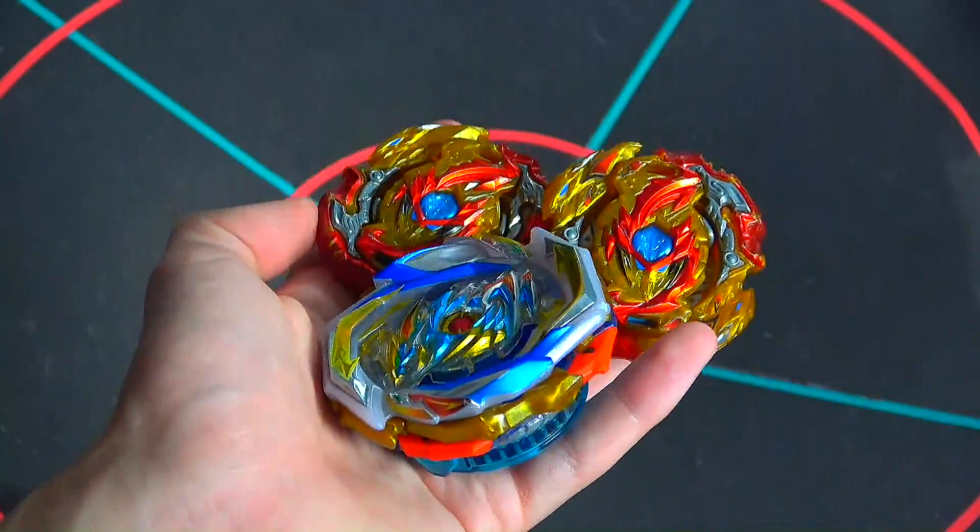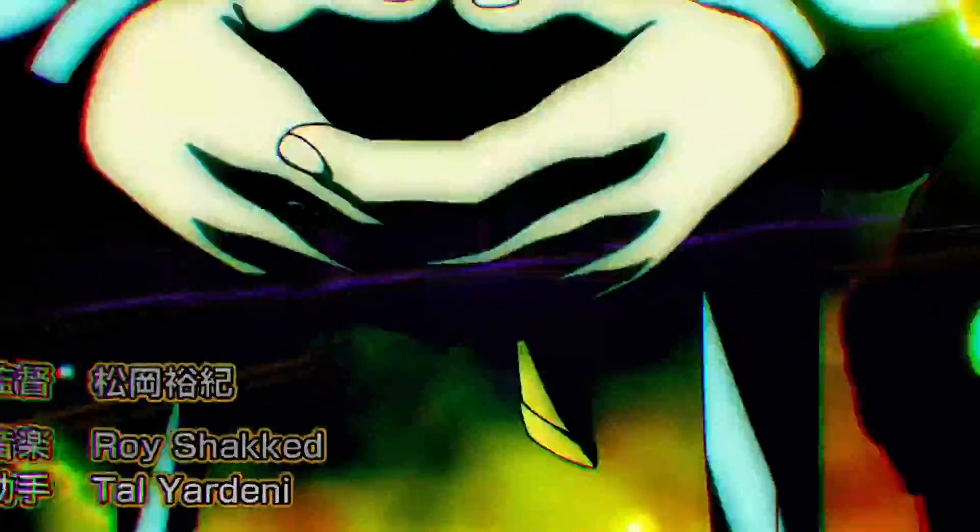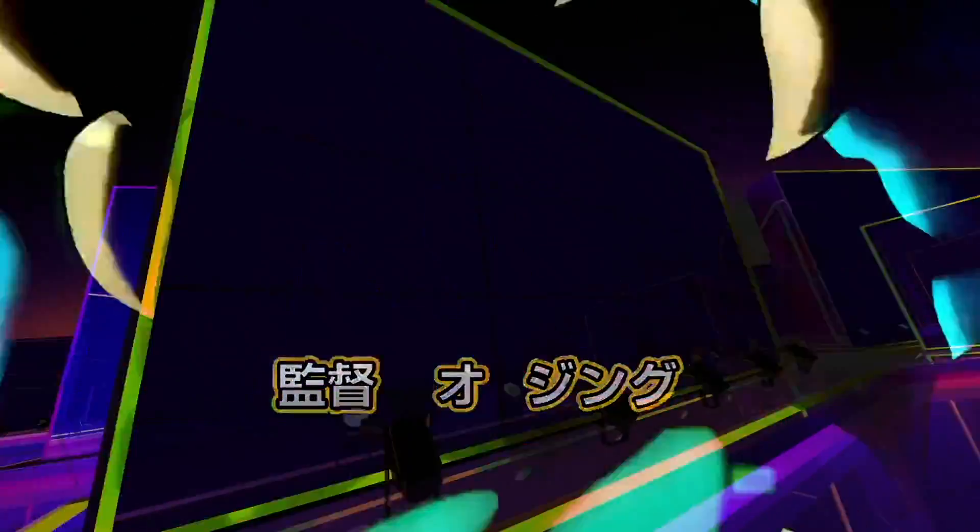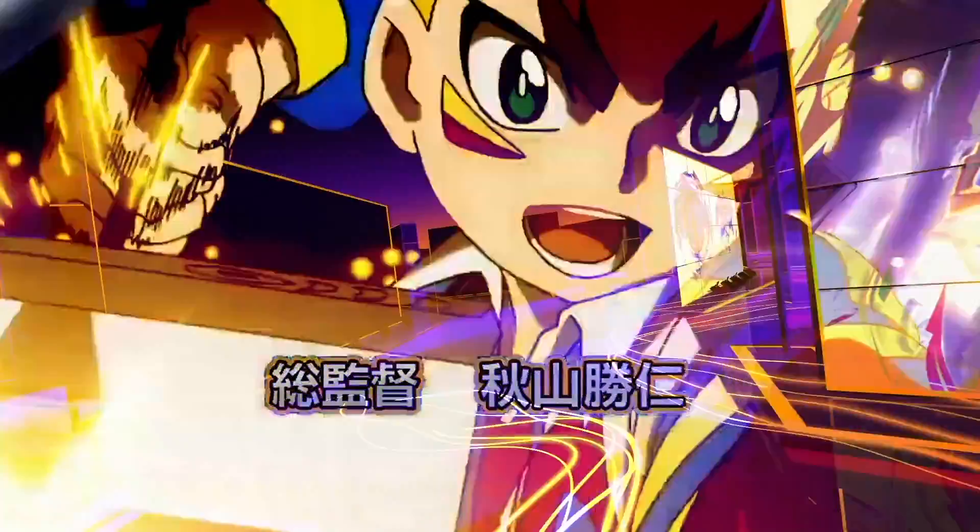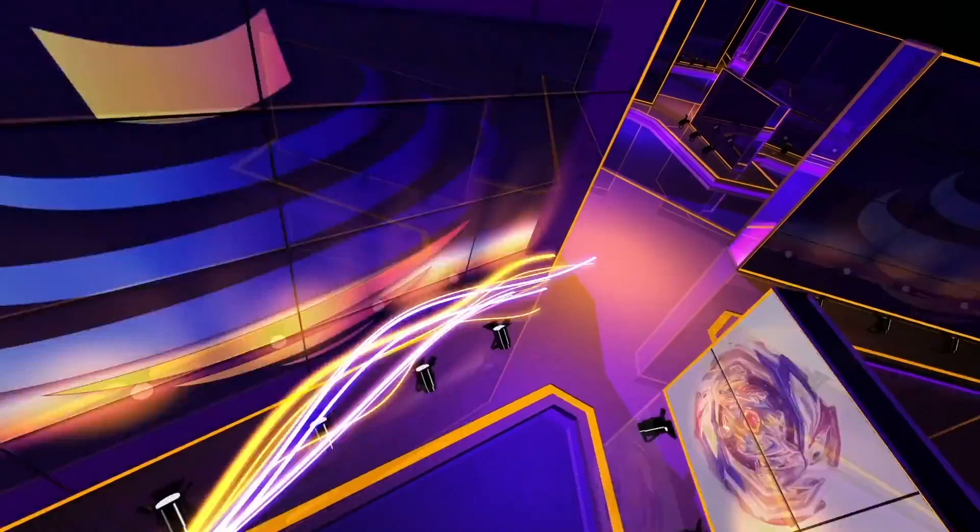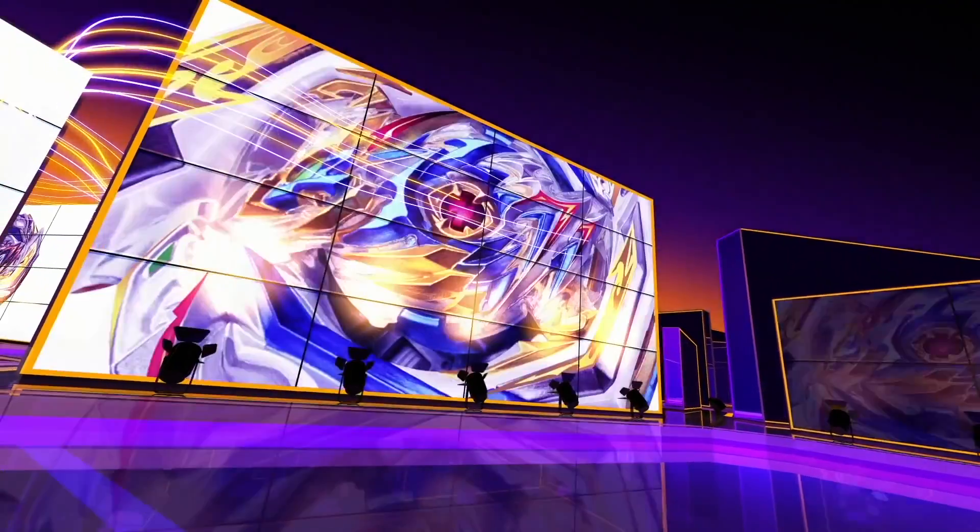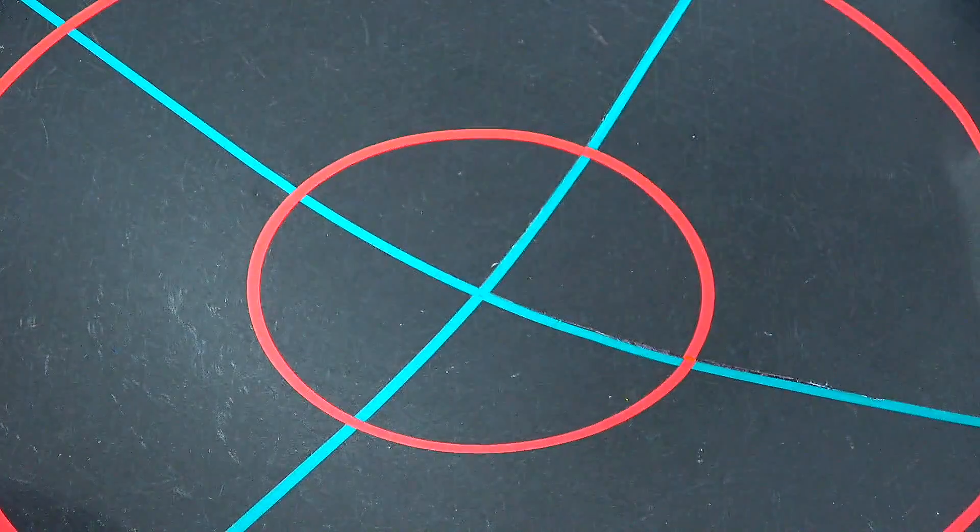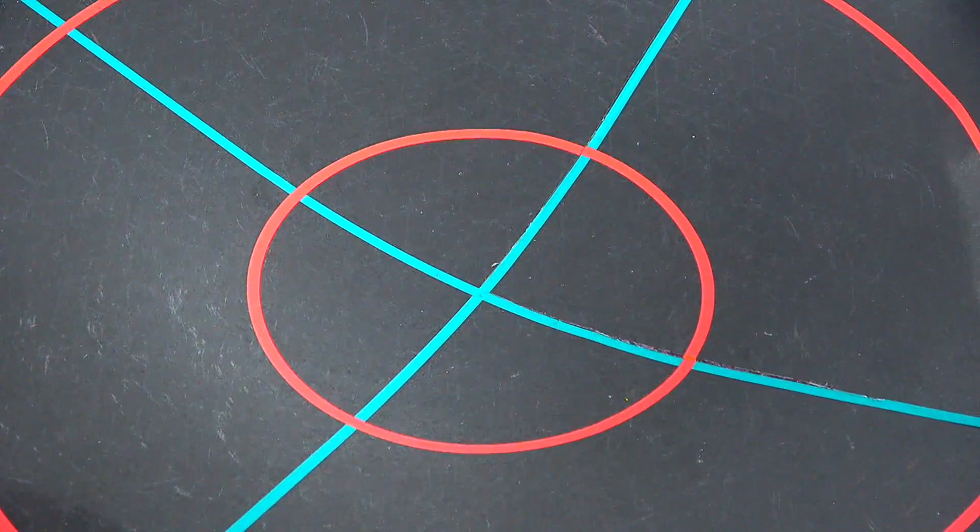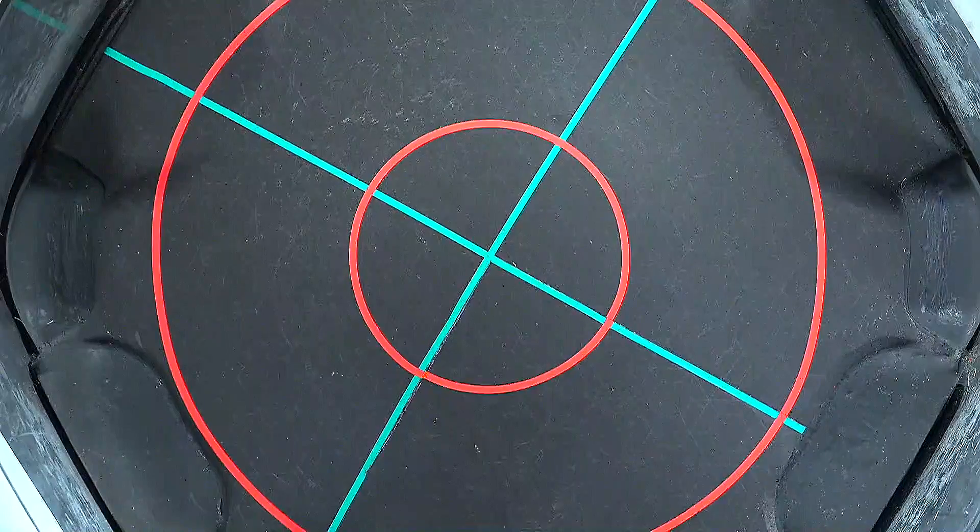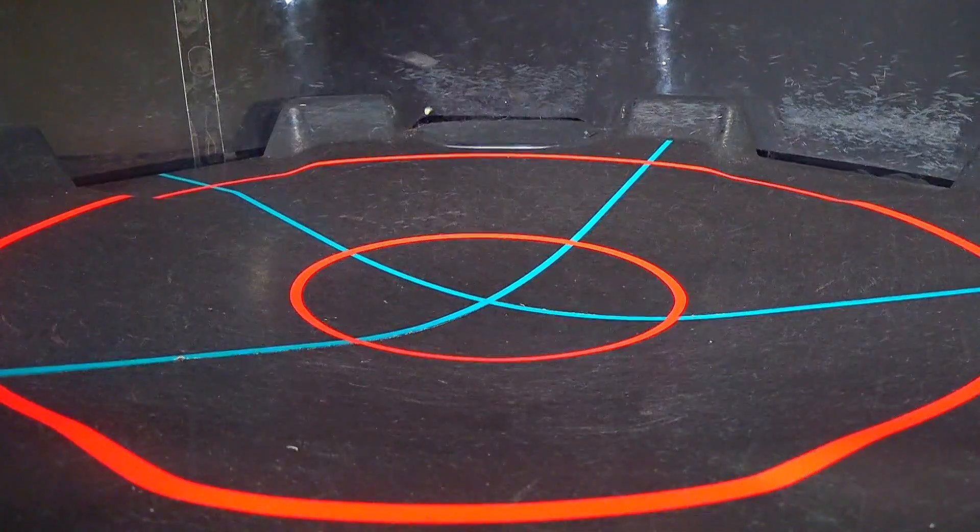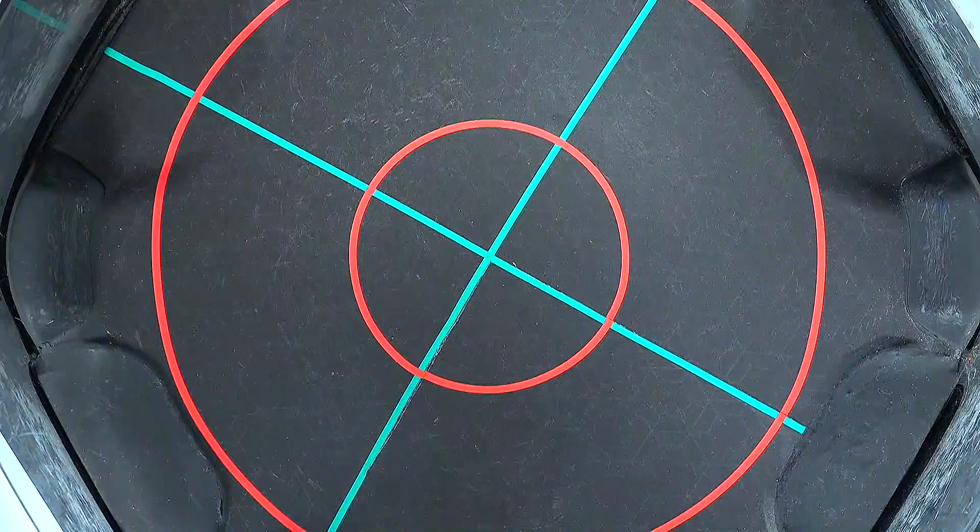It's time for Lord Spriggan against Imperial Dragon. Today we've got Imperial Dragon against Lord Spriggan. Lord Spriggan is hyped up to be the most OP bay. Is it really? Not really. It just has stoppers, but after they get worn, the bay's just really good at spin-stealing, that's about it.